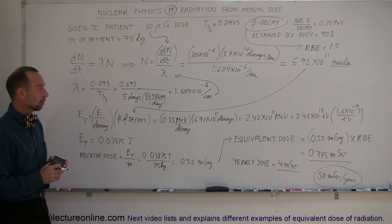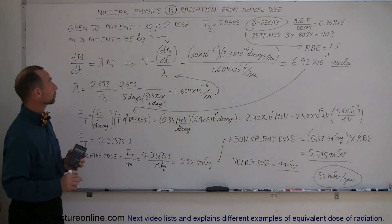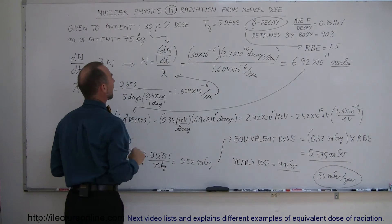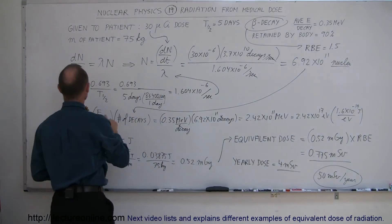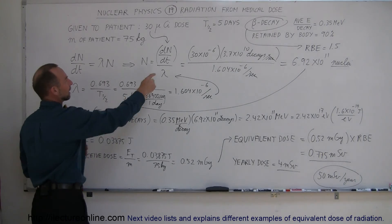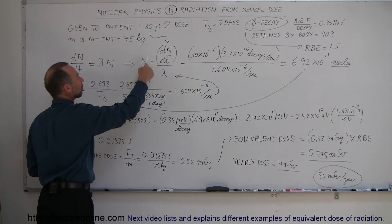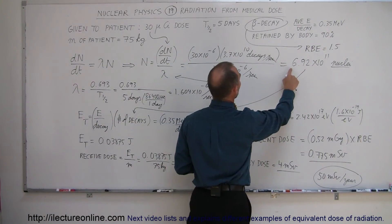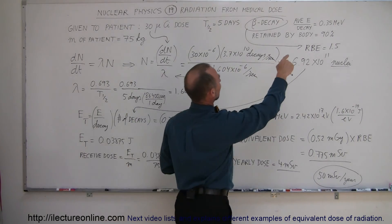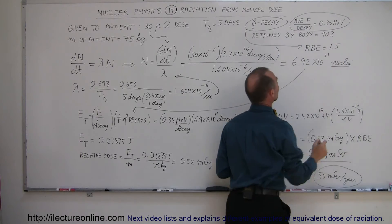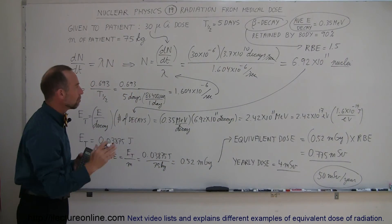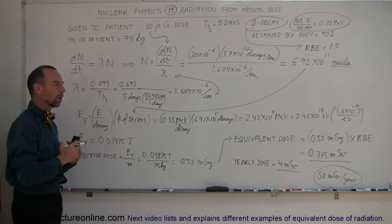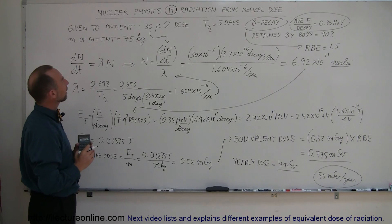So again, a quick review. The original radioactivity was 30 microcuries per dose. We use that as the decay rate starting off. The half-life was five days, so using the half-life we could find the decay constant. Taking the rate divided by the decay constant gives us a total number of radioactive nuclei in that medicine. If each of those nuclei gives us an average energy of 0.35 million electron volts per decay, you multiply times the total number of decays to get the total energy received by the body. So that would be the total received dose.